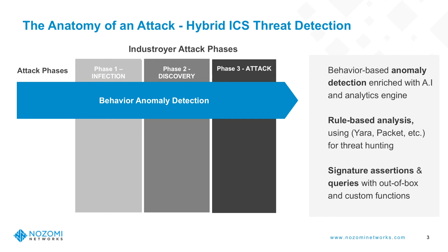Nozomi Networks has what we call a behavior-based anomaly detection capability that's enriched with AI and comes with an analytics engine that not only allows us to identify anomalies in communication structure and data flow, but also correlate and test that correlation with covariance across various incidents and identified anomalies. In other words, if you have a geodistributed network or expansive plant or network of operations, you're going to have various alerts or incidents that might have an underlying cause — in this case, it could be Indestroyer — and you wouldn't otherwise know that without a comprehensive anomaly detection capability.